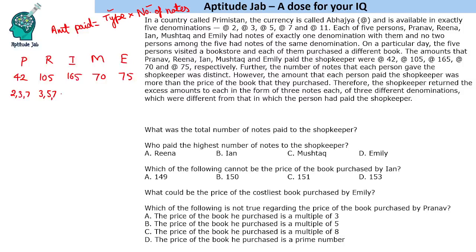165 equals 3 × 5 × 11, so that person can have denomination 3, 5, or 11. The person who paid 70 can have denominations 2, 5, or 7. And 75 is possible with only denominations 3 and 5.